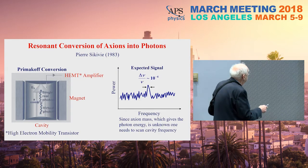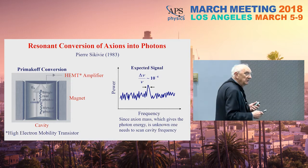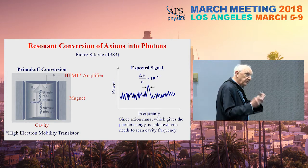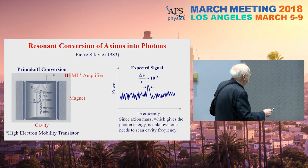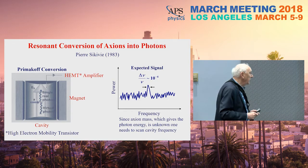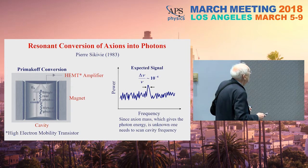In the ADMX detector, a cavity is surrounded by a large superconducting magnet. An axion decays to produce a photon inside the cavity. Because you don't know the axion mass, you don't know the photon frequency, so you're looking for a peak in the power spectrum of the cavity as a function of frequency — the cavity must be tuned to resonance with the photon frequency. Photons are detected with an antenna; in the original 1990s version, the amplifier was a semiconductor high-electron-mobility transistor, or HEMT.